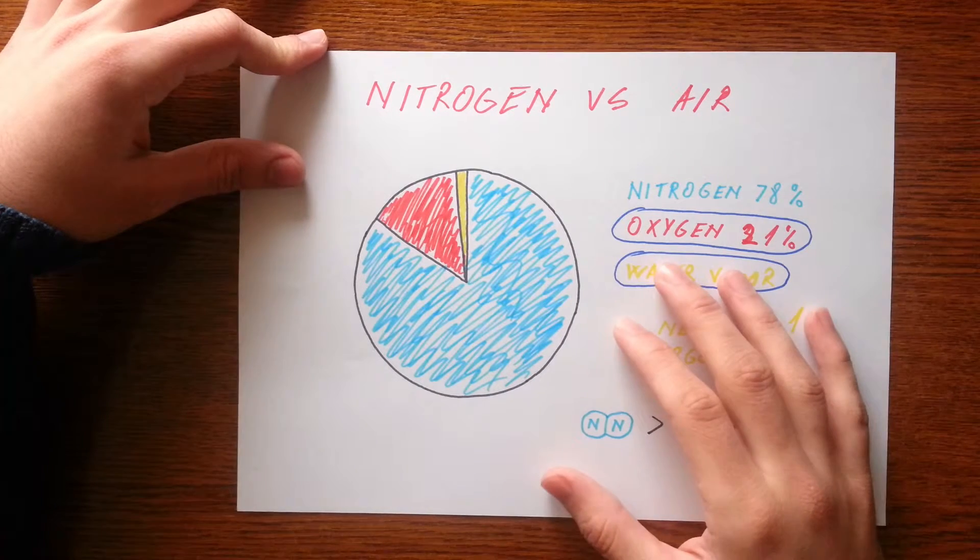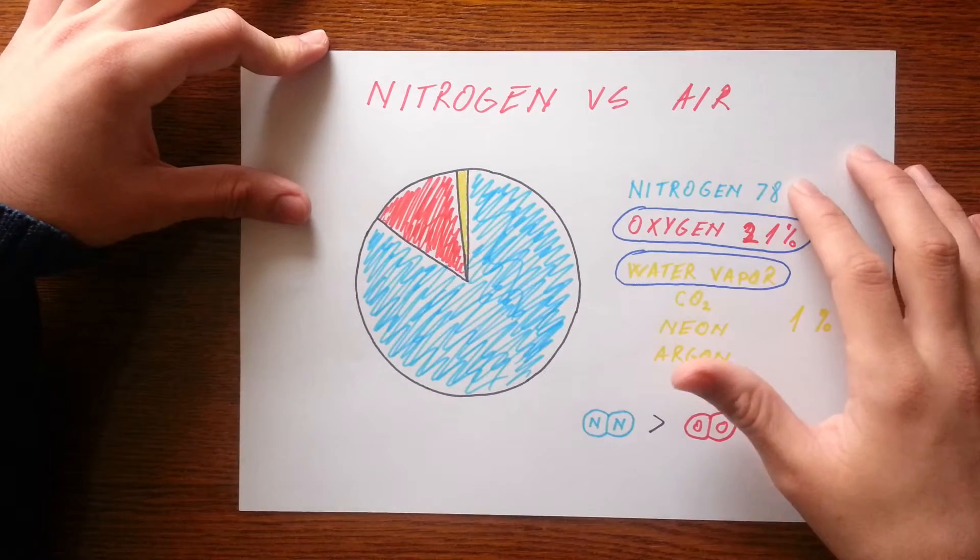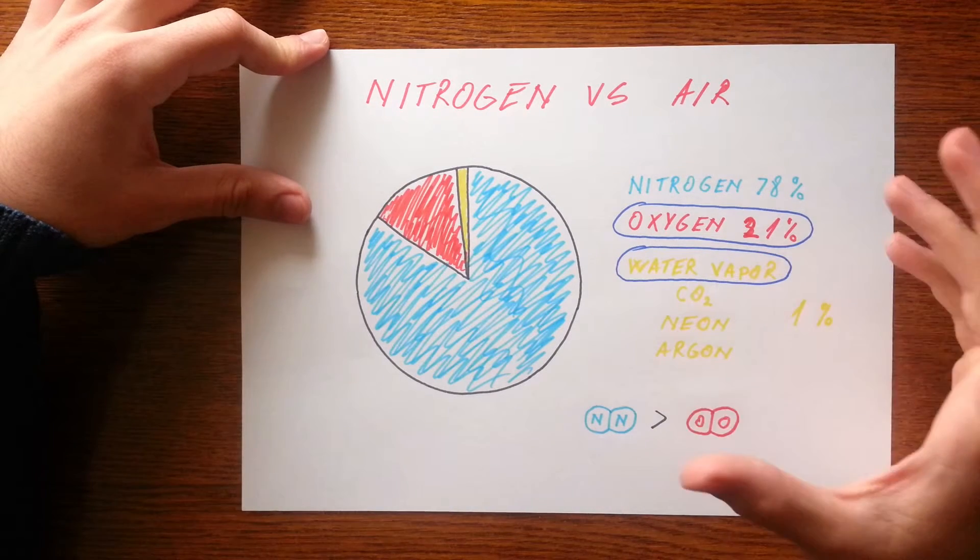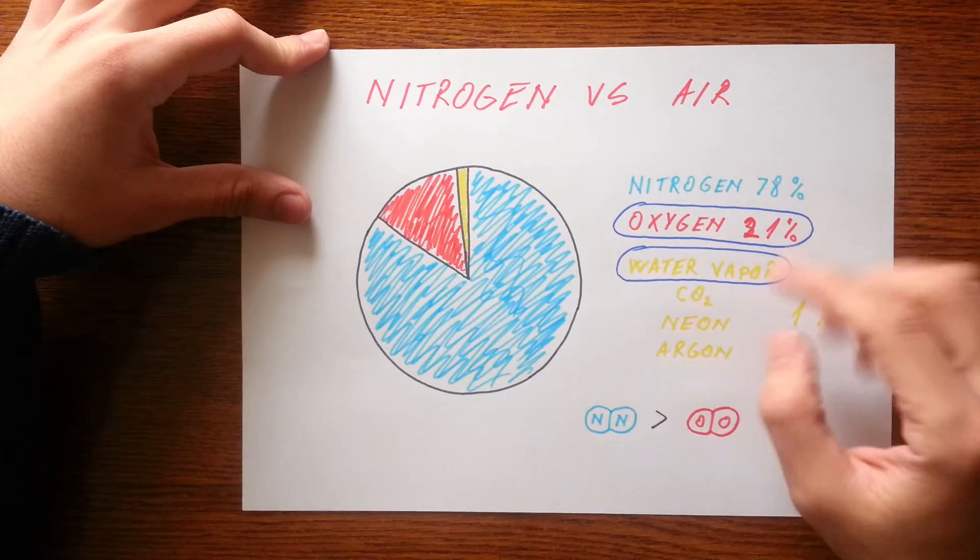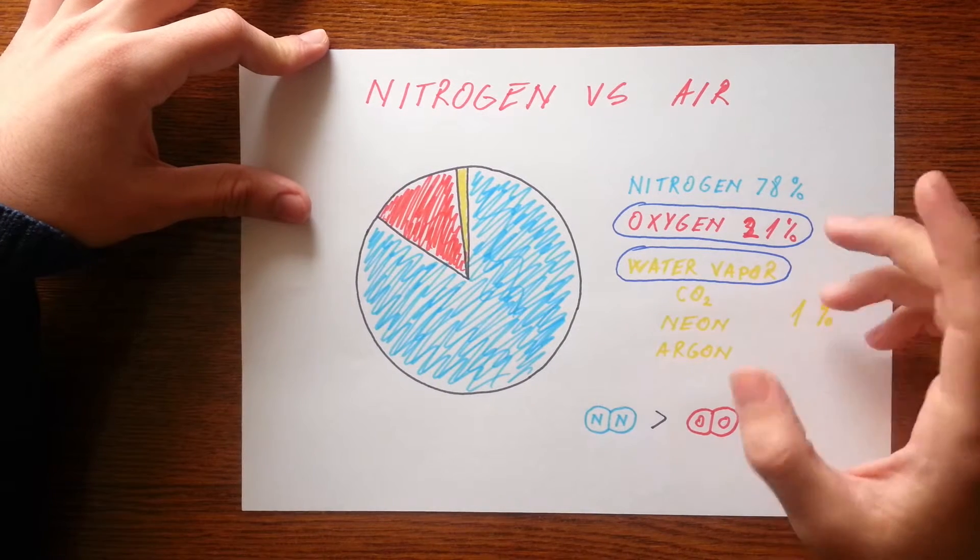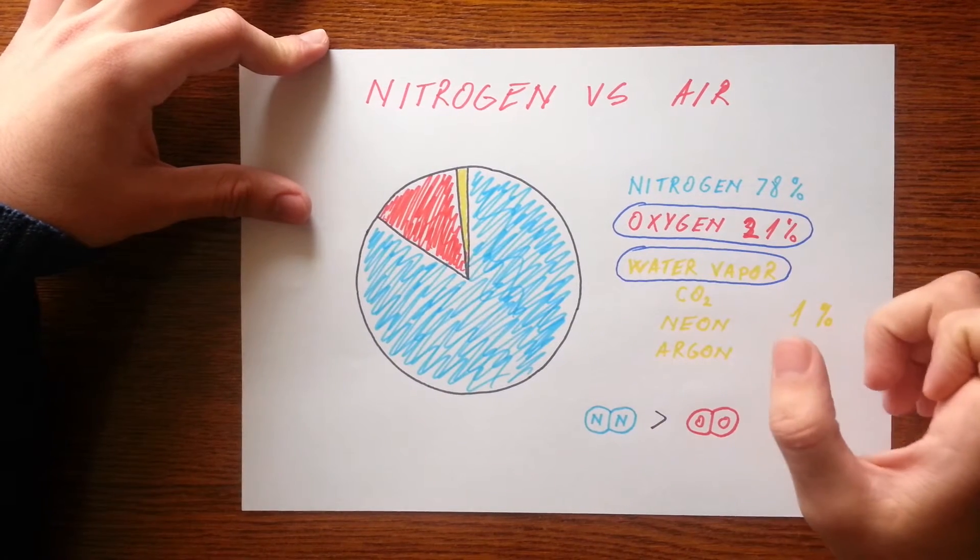Let's start with the basics. Air is 78% nitrogen, 21% oxygen, and the rest is water vapor, CO2, and small concentrations of noble gases. But we can ignore the other gases.